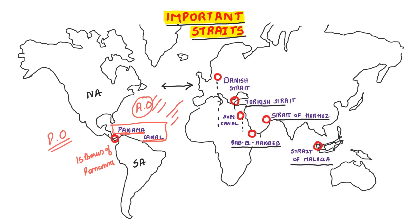Next is the Danish Strait. We have to look at Denmark. This is Denmark. The Danish Strait connects the Baltic Sea and the North Sea.